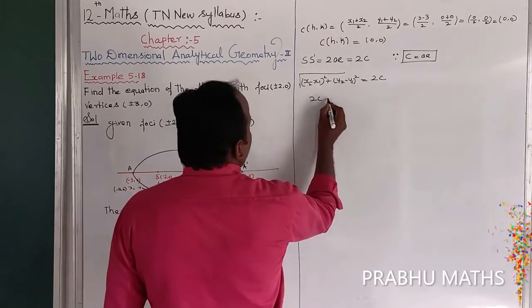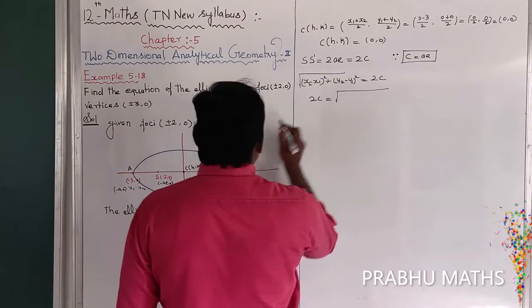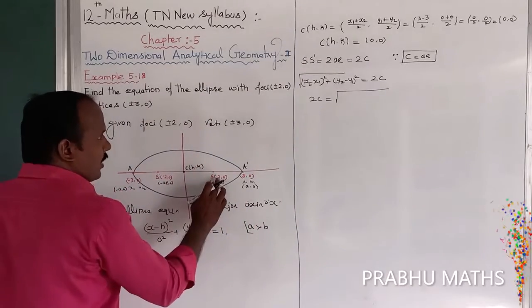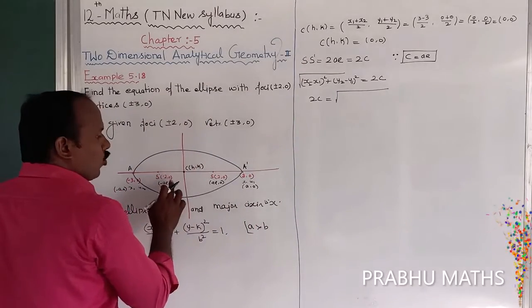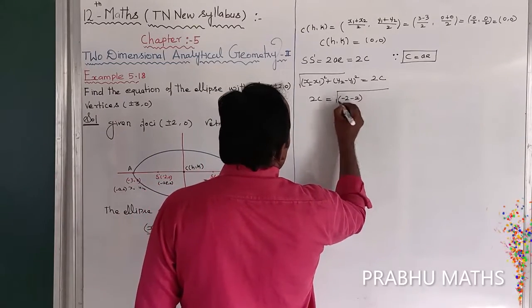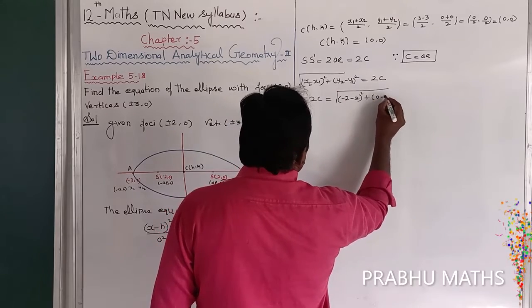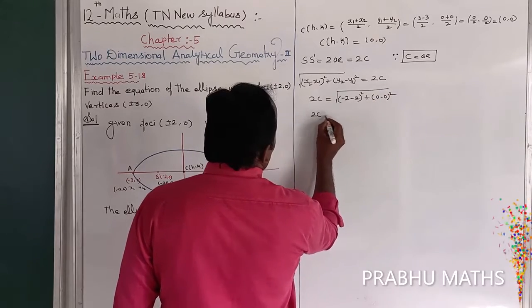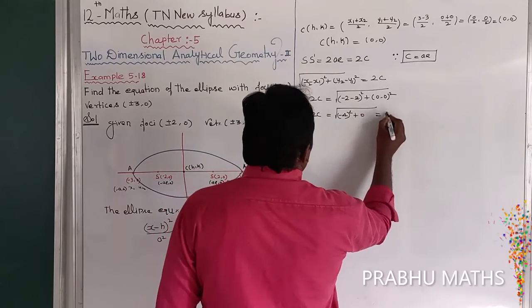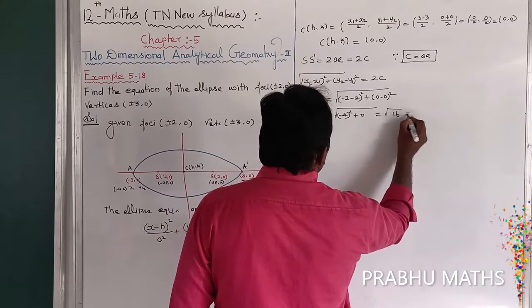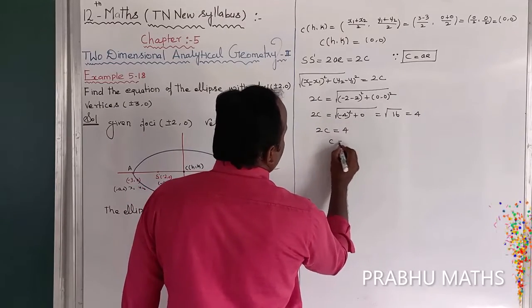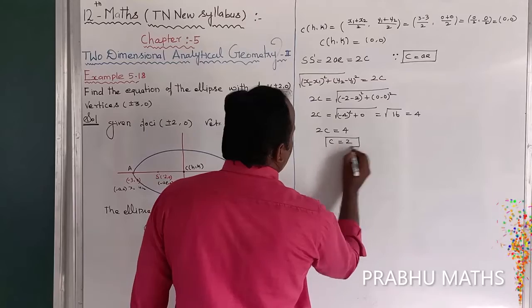So 2c = √[(−4)²] = √16 = 4. Therefore 2c = 4, which gives c = 2.